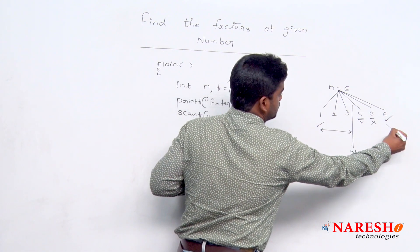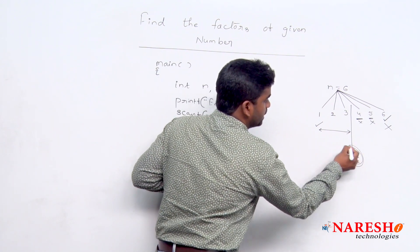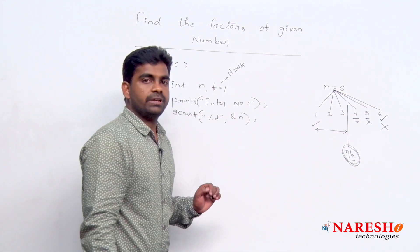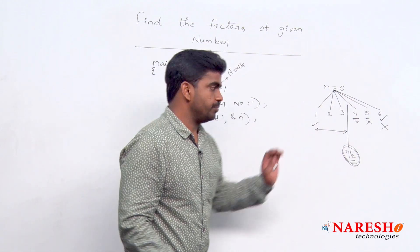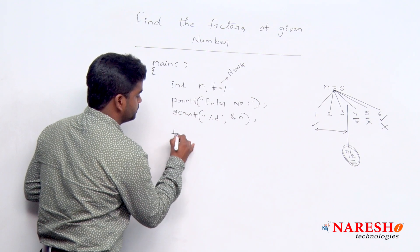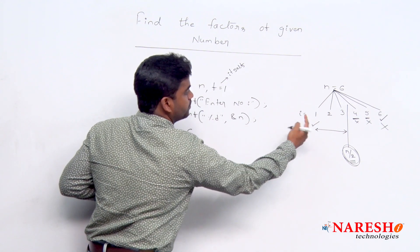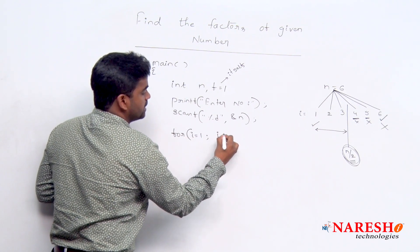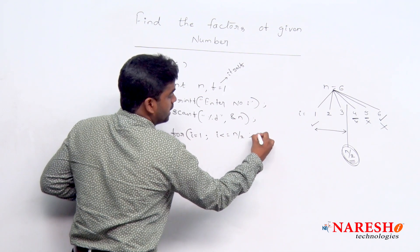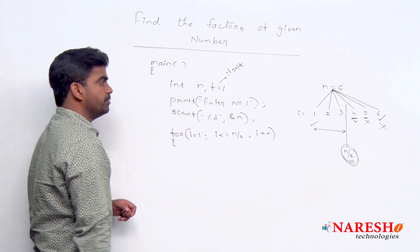No need to check this one. Here we are checking only up to n by 2. We are repeating the loop from 1 to n by 2. i value starts with 1, i is less than or equal to n by 2, every time by 1 we are increasing.